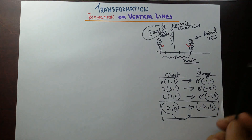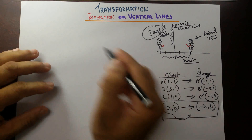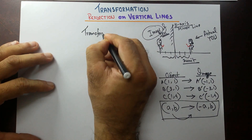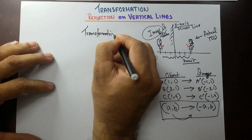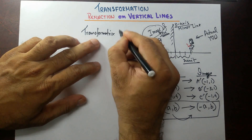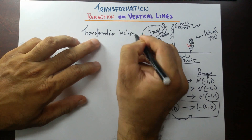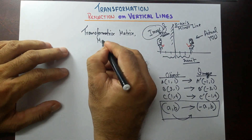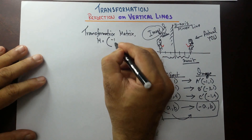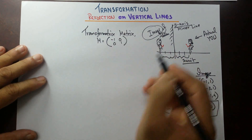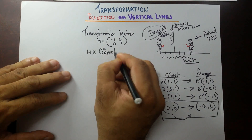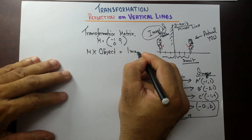And next, you need to know the transformation matrix. The transformation matrix whenever you have any reflection on the y-axis — we call it M — and it's going to be [[-1, 0], [0, 1]]. There is a formula: transformation matrix times object equals image.